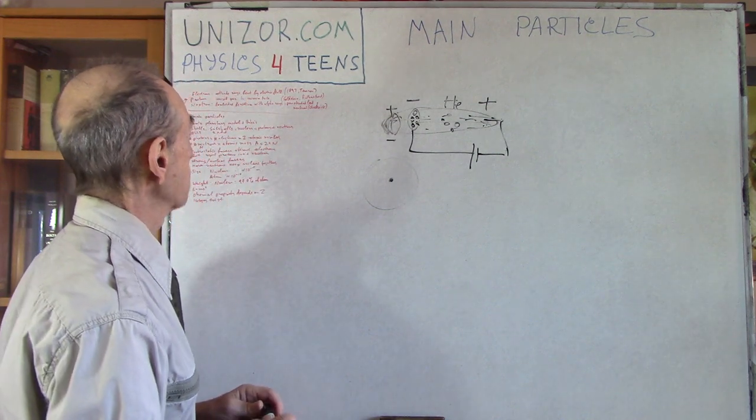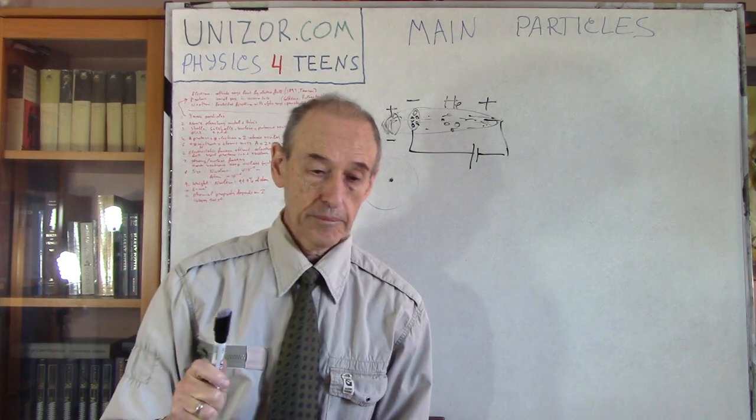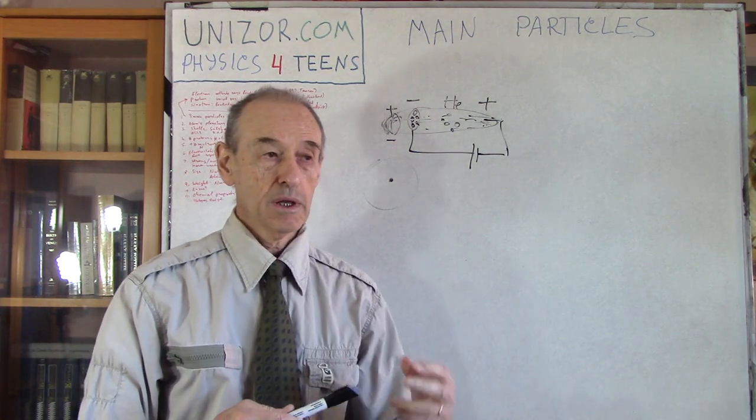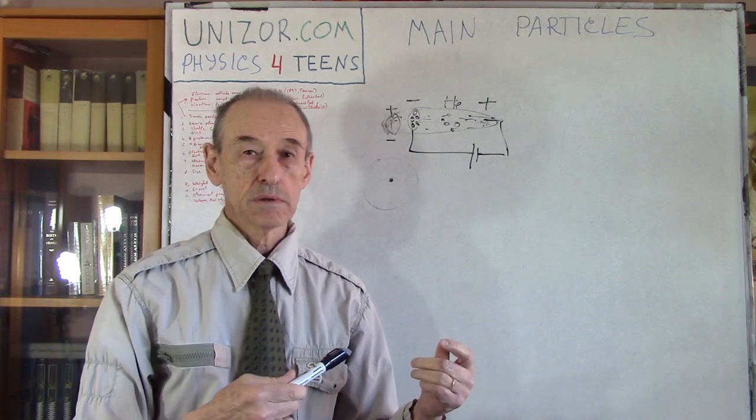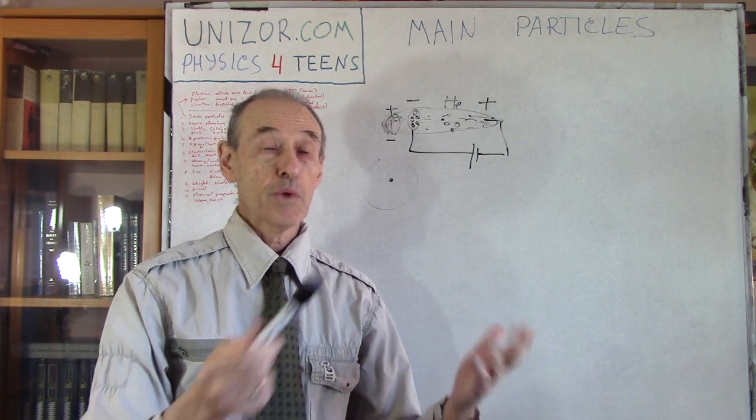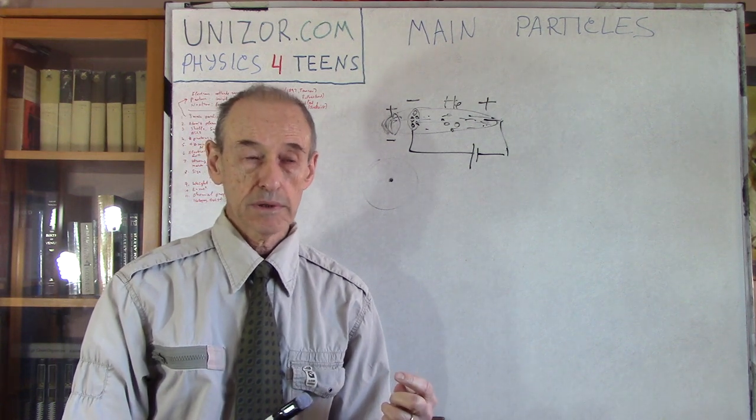What is interesting is there were experiments which proved the existence of neutron. This was done in the 1930s by Chadwick the English British physicist. His experiments were where he was bombarding beryllium with certain rays which are coming from radioactive material.